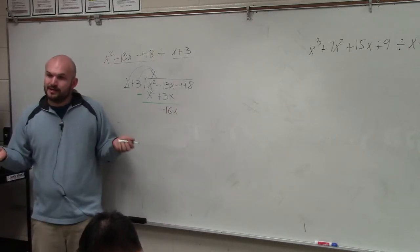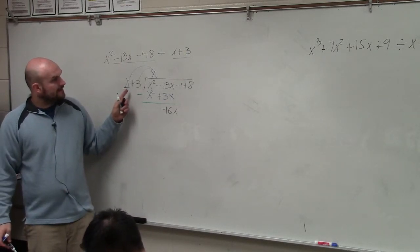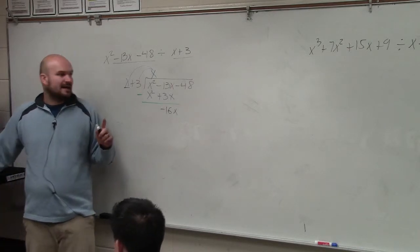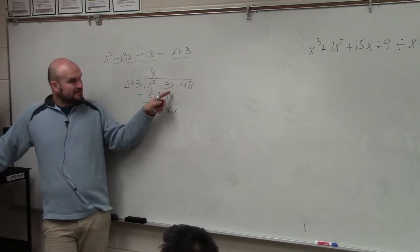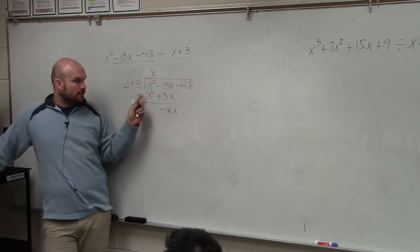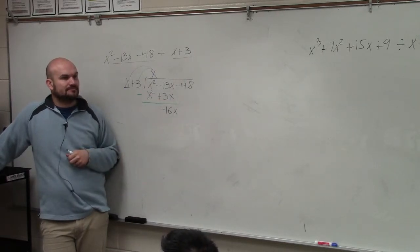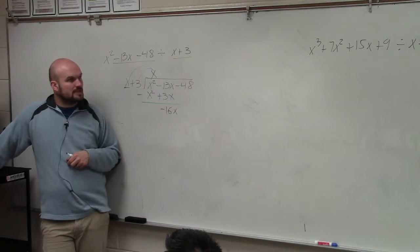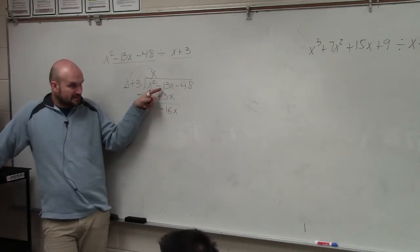So now once we get to here, we start the process all over again. Wait, hold on. I thought it was a negative. Think about it again as subtracting money. You owe me $13, right? You borrow three more dollars. You now owe me $16, correct? Negative is owing, right? Negative is owe. Positive is what you have, correct?